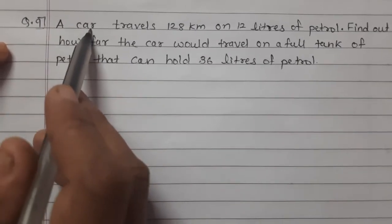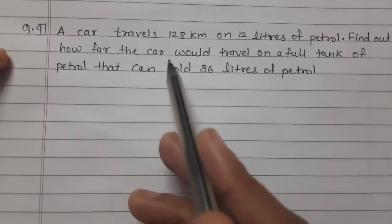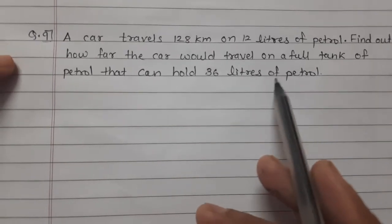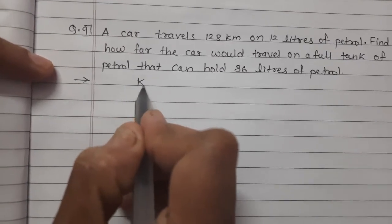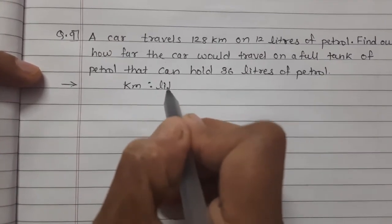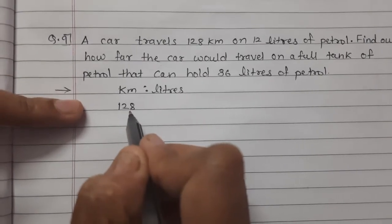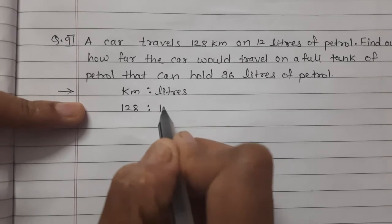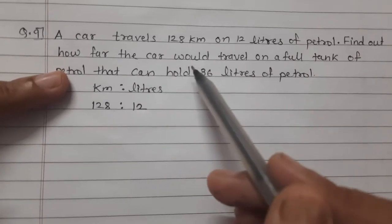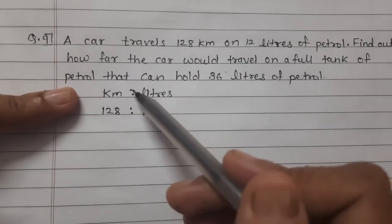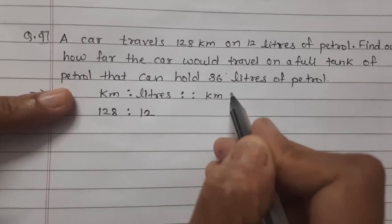Let's solve question number 9. A car can travel 128 kilometers on 12 liters of petrol. Find out how far the car would travel on a full tank of petrol that can hold 36 liters. We set up: kilometer is to liters. Car travels 128 km on 12 liters.